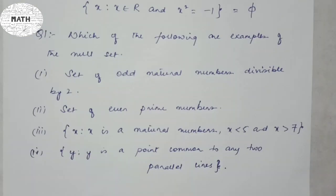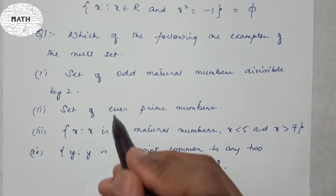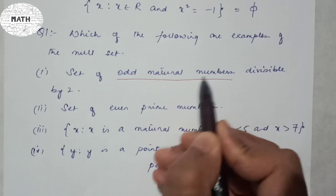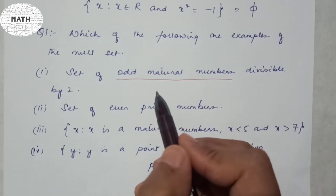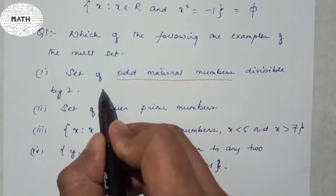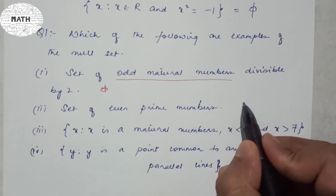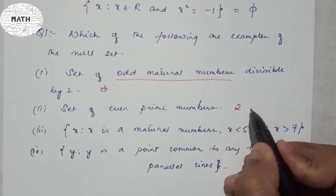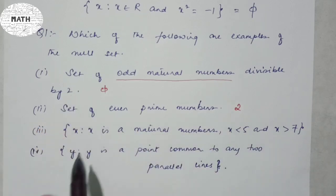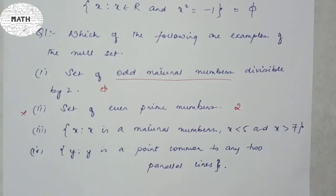Let's do the exercise: which of the following are examples of the null set? Number one: set of odd natural numbers divisible by two. An odd number is one not divisible by two, so this is an empty set. Number two: set of even prime numbers. The only even prime is two, so this is not a null set.